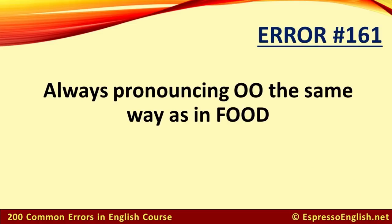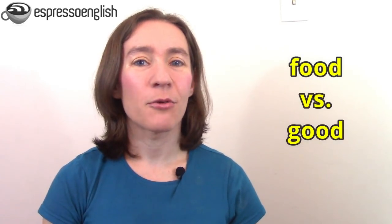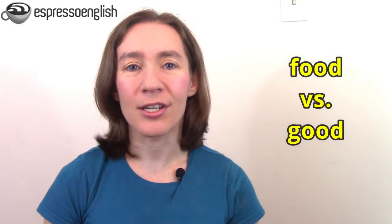Error number 161. The first letter combination is OO. A lot of students pronounce this OO, as in food, all the time. But it's not always pronounced this way. We also have words like good. It's good, not good. It's a slightly different sound, between food and good.